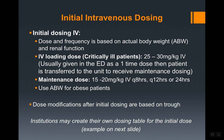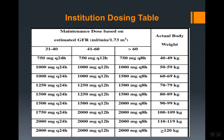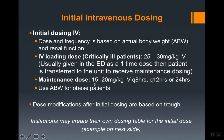As mentioned, actual body weight is used even for obese patients. Dose modifications after initial dosing are based on trough levels. Institutions may create a vancomycin dosing table showing actual body weight versus creatinine clearance to determine dose and frequency — usually 15 to 20 mg/kg, given every 8, 12, or 24 hours depending on renal function.